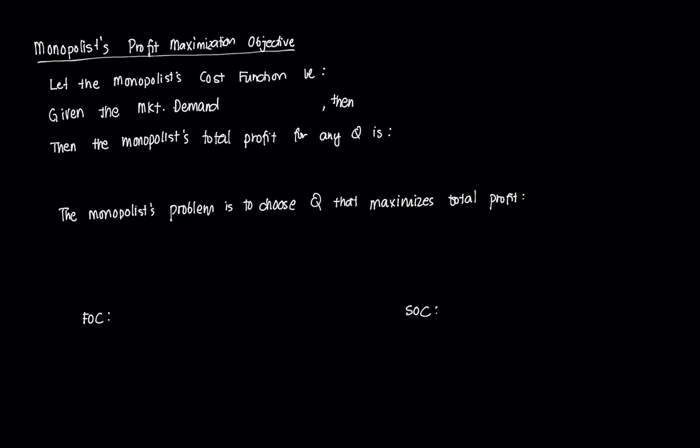Hi everyone, and welcome to this video on our discussion on monopolies. Today we're going to discuss a concept which is the main objective of a monopolist. In theory, we believe that the main objective of a monopolist, like any firm, is to be able to maximize its profit. And to do that, we need to identify how we're going to determine its revenue and its costs.